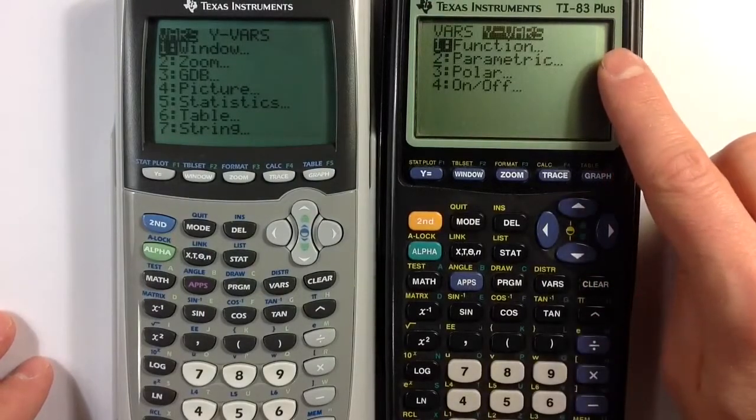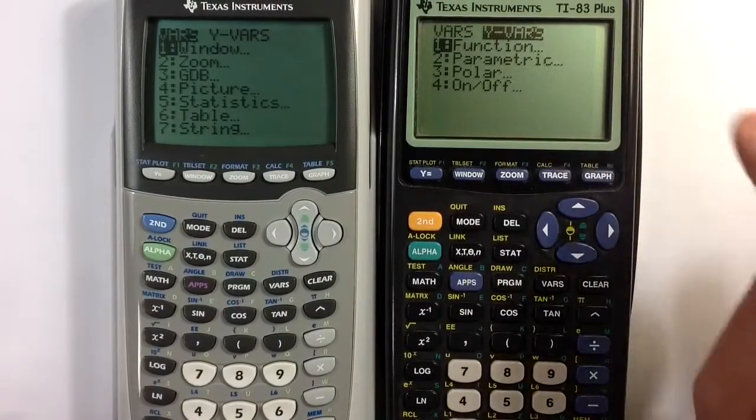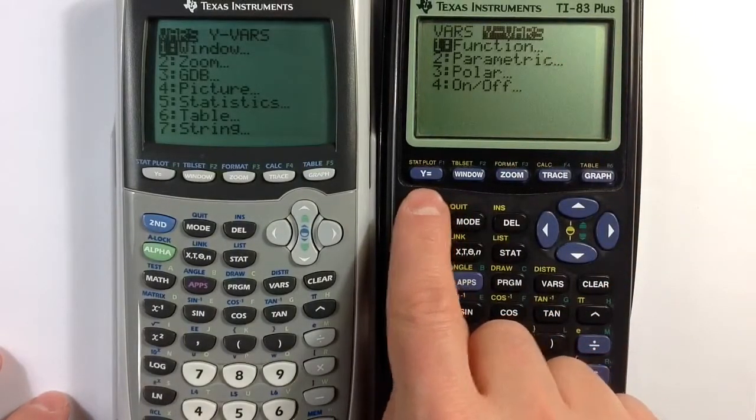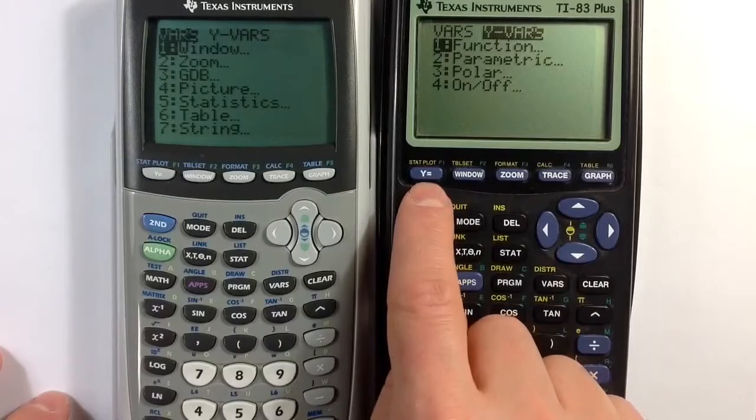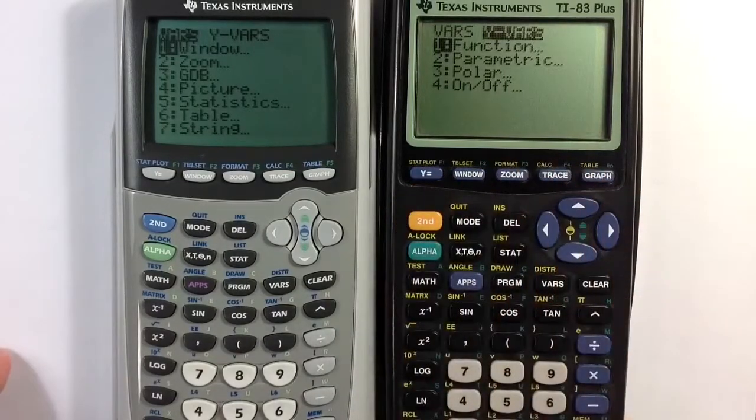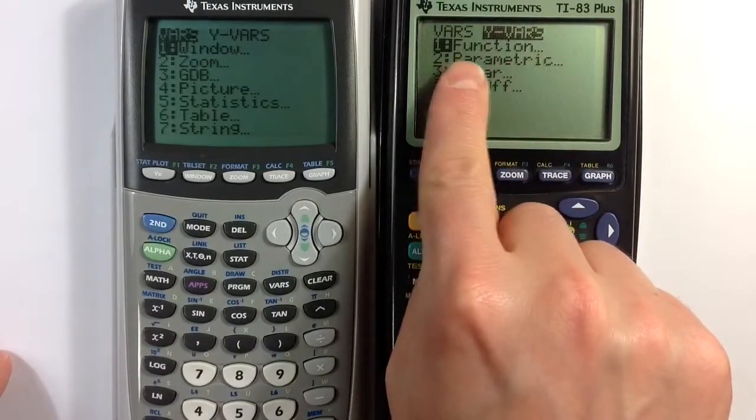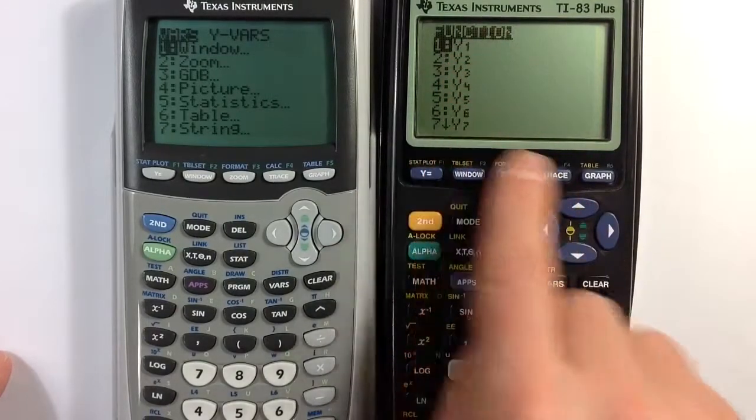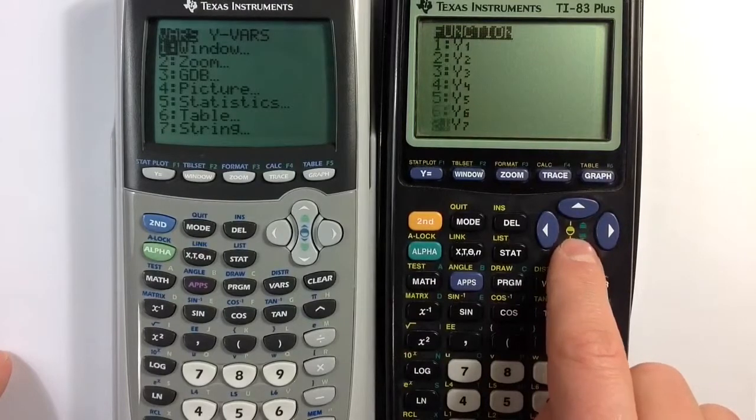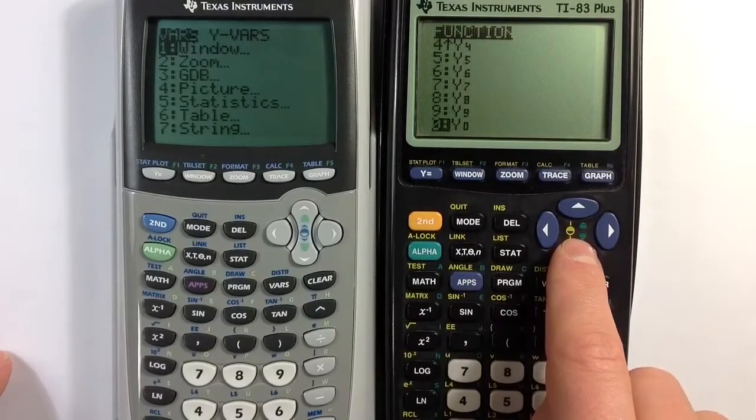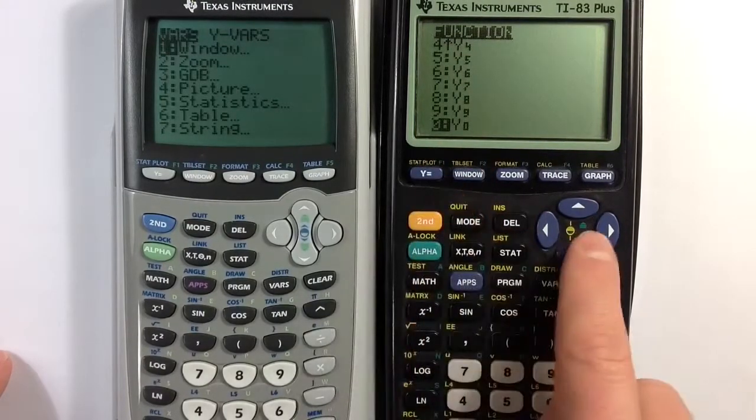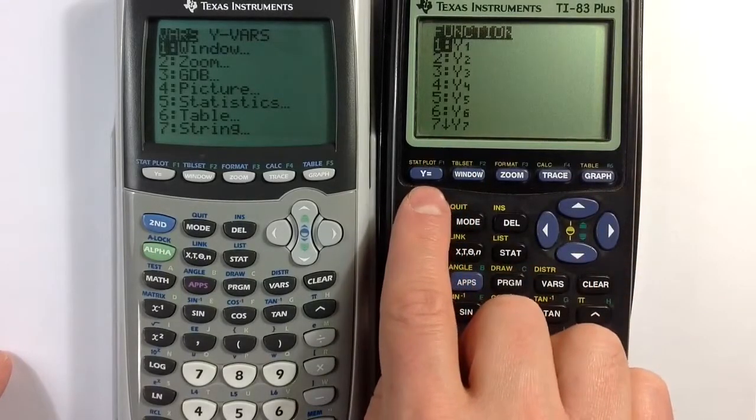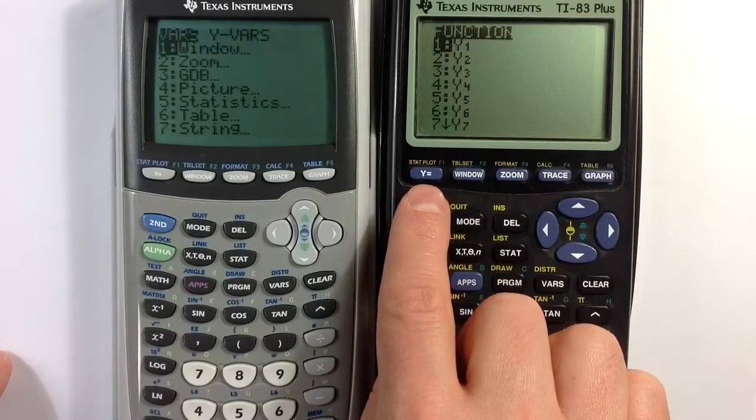Allows us to access the definitions of functions that we can create in the y equals menu. And so I think that's a pretty powerful tool. Let me show a little bit about that. So under function, we can see y1 through y9 and y0, so there are ten registers where you can define functions. And to define something we can go to the y equals menu.